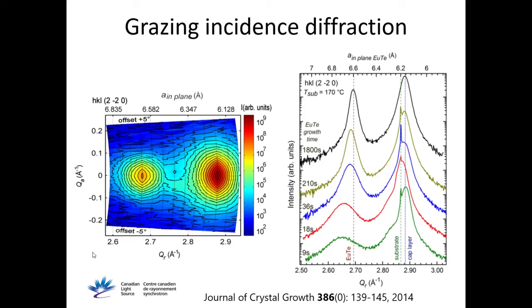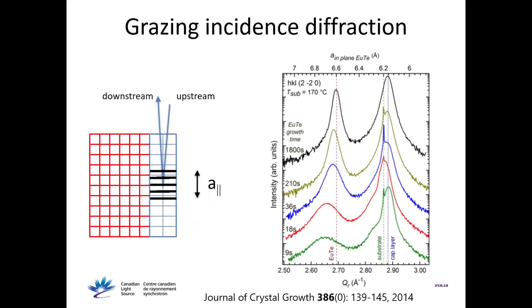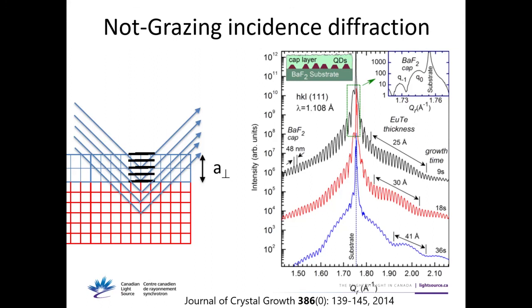It pays off because you get information in more directions — you get more sensitivity and you get particle size as well as strain, and a lot more information. This is a stark contrast between what you get with grazing incidence versus coplanar regular diffraction geometry in a thin film.